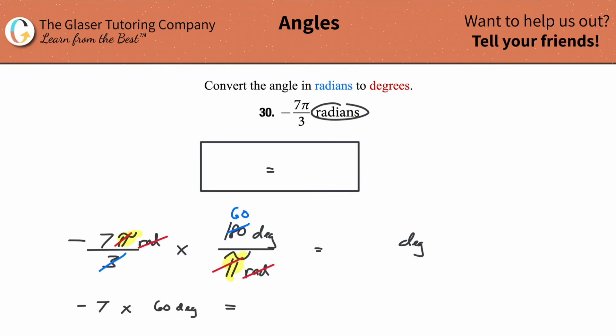So we can rewrite this now very simply as negative 7 times 60 degrees. And what would that equal? We could take out the calculator, or you might know this to simply be negative 420 degrees. That's the angle.